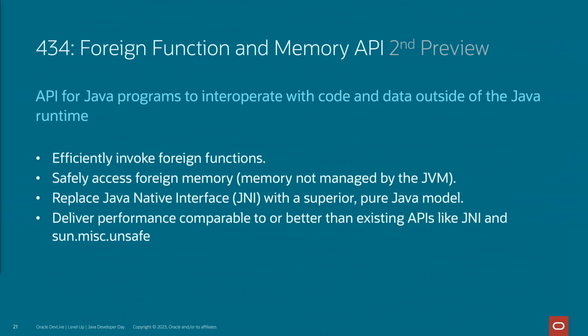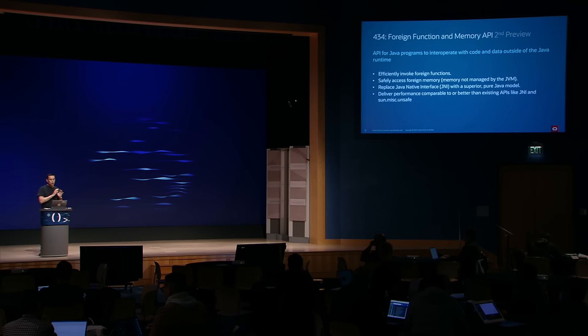The first is a second preview of the Foreign Function and Memory APIs. The goal of this feature is to make it simple for Java programs to use functions written in languages other than Java, initially C, and to safely access memory not under the control of the JVM. We already have the Java Native Interface, JNI, to access non-Java code, but it's very cumbersome and requires code to be maintained in C on top of Java. This replacement should have performance as good as or better than current alternatives.